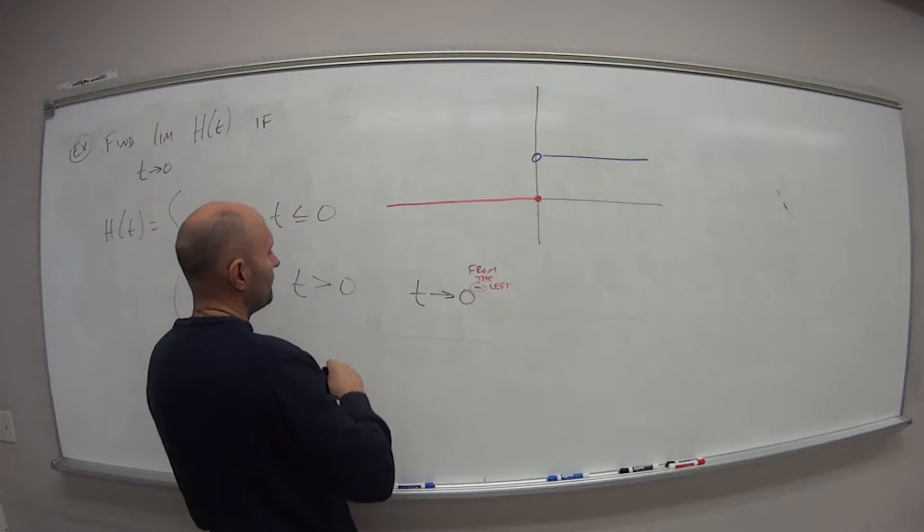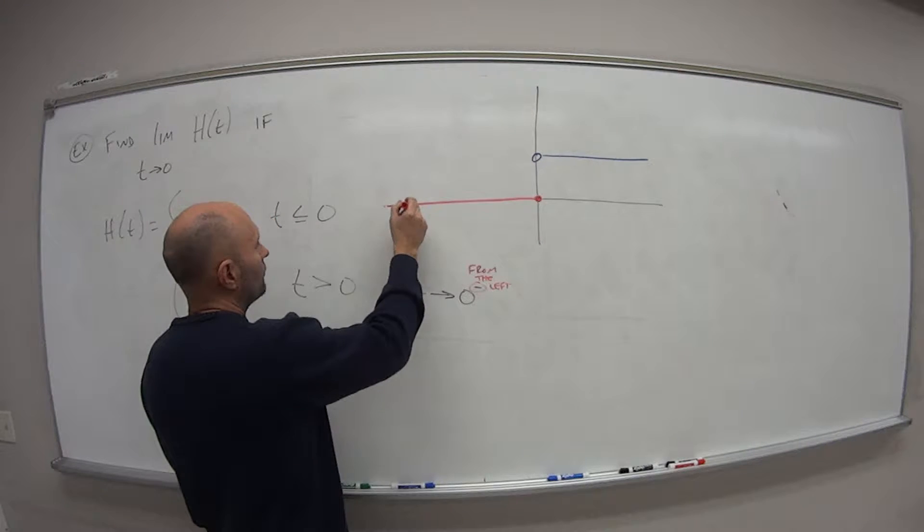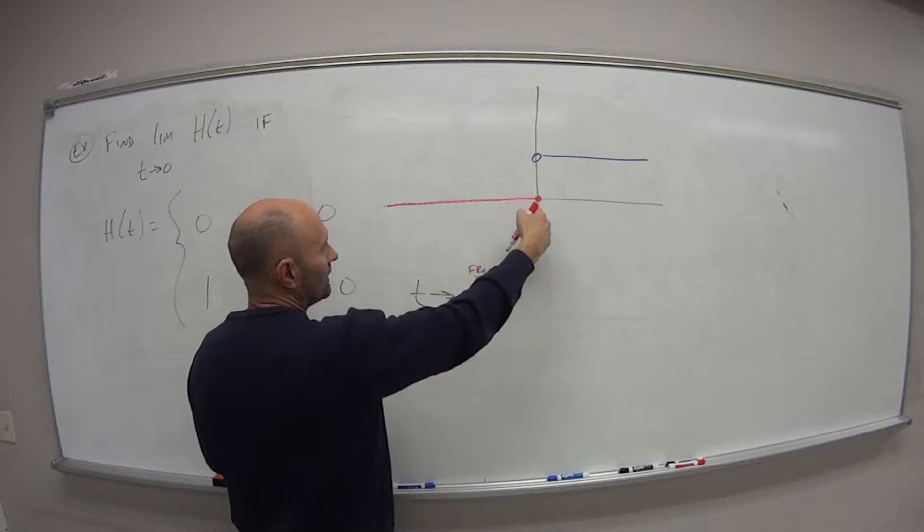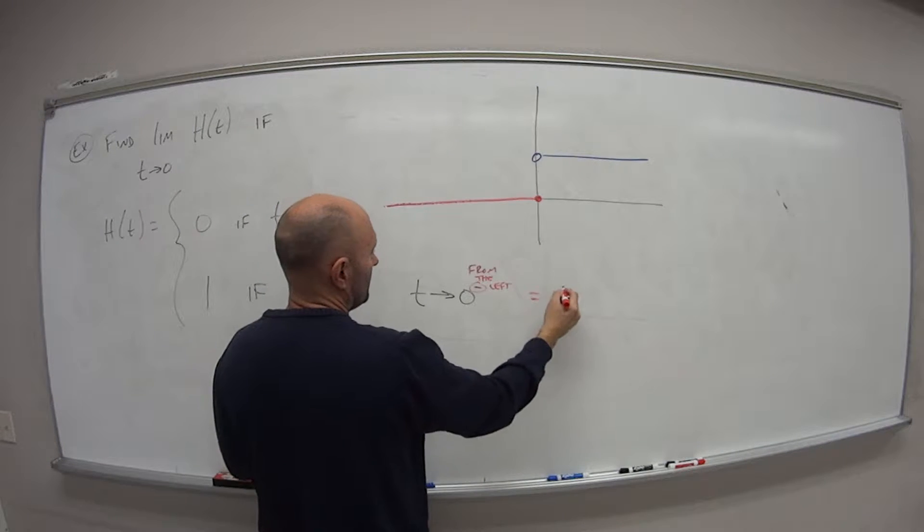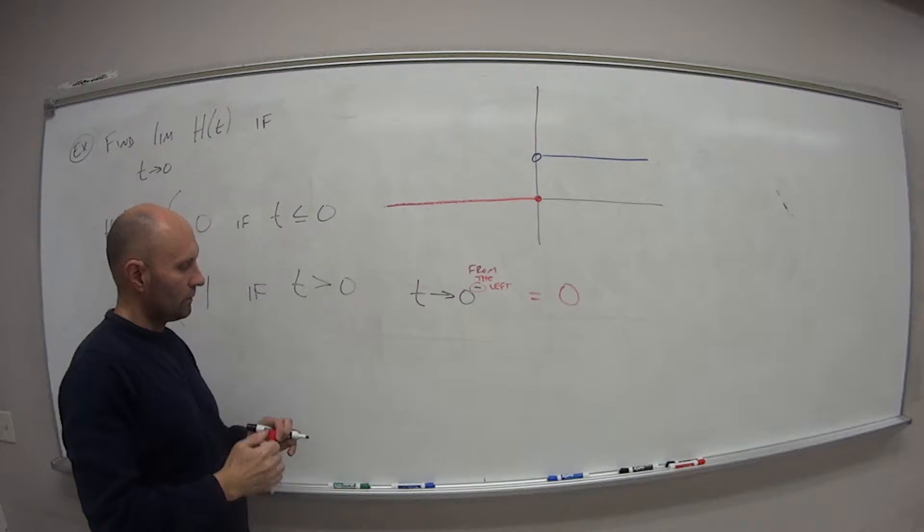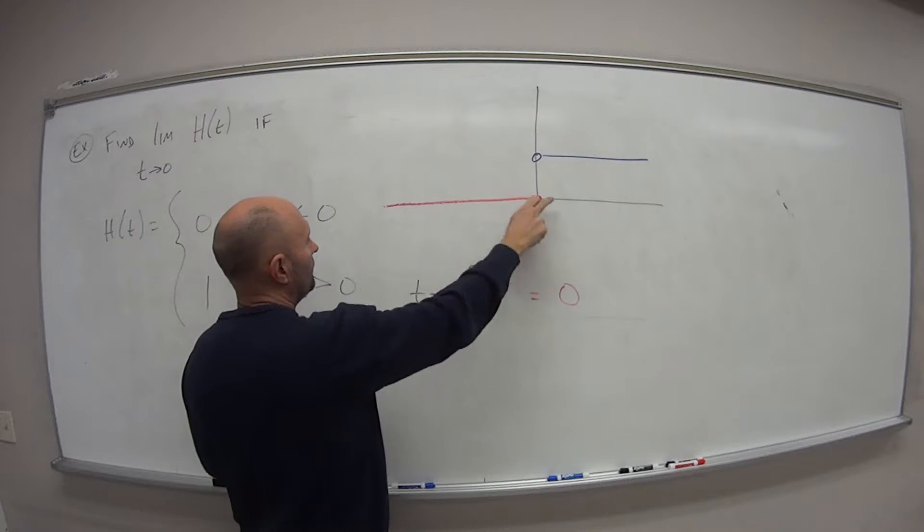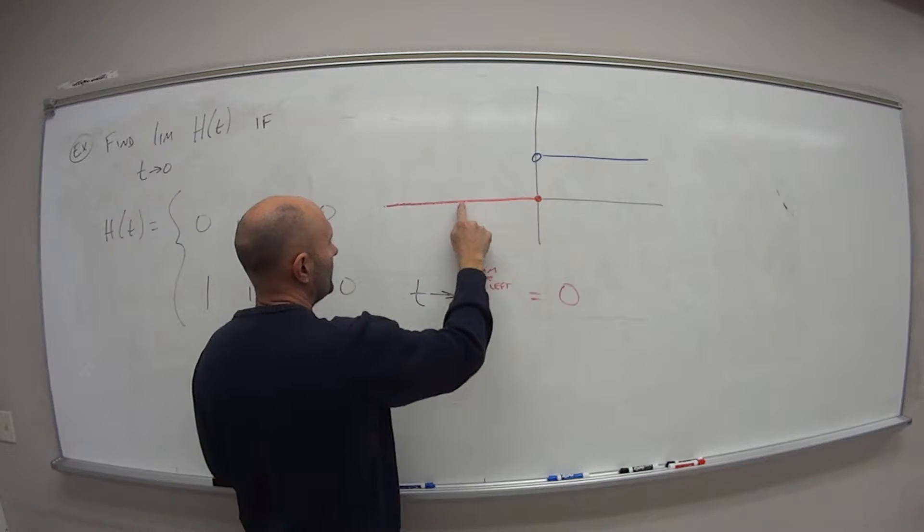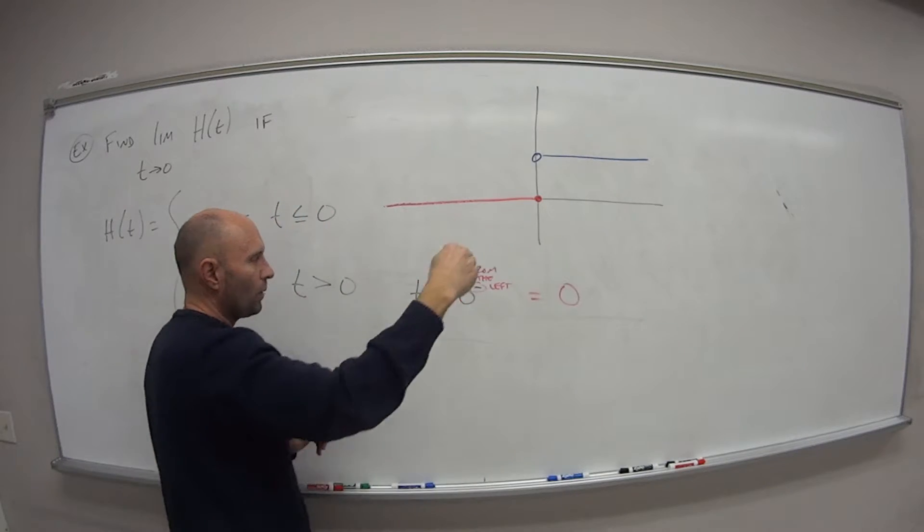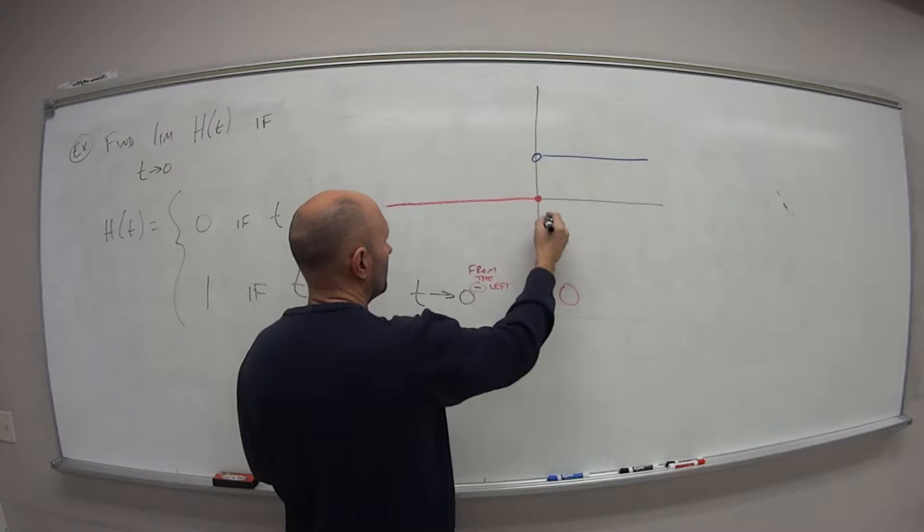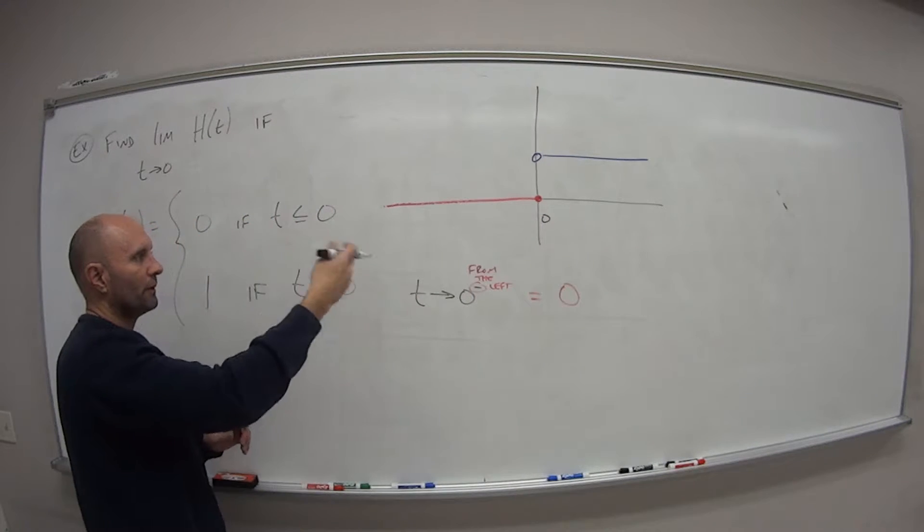So as I'm getting closer and closer to 0 from the left, what value does this approach? Well, it keeps approaching 0, right? So I'm way over here, it's 0. Here, 0. Here, 0. Here, 0. It's always at 0. When I'm approaching 0, x is equal to 0, or t rather, is equal to 0 from the left-hand side.